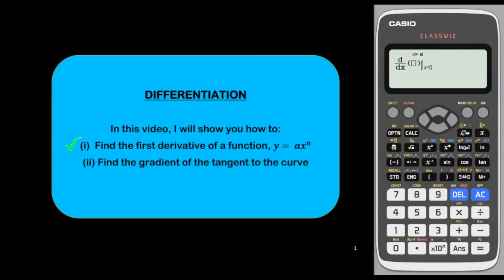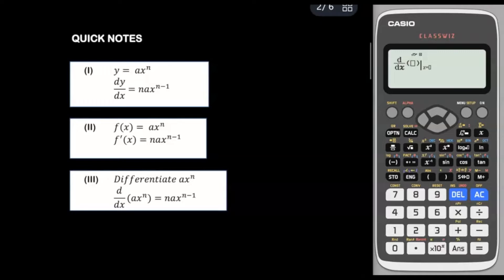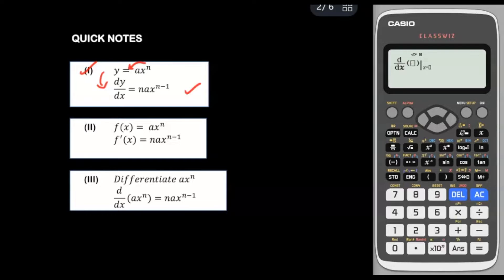In this video, I will show you how to find the first derivative of a function Y equals AX to the power N, and how to find the gradient of the tangent to the curve using the Casio Classwiz calculator. To find the first derivative, we memorize the formula: DY/DX equals NAX to the power of N minus 1. We bring down the power N, multiply with A, and reduce the power by 1.